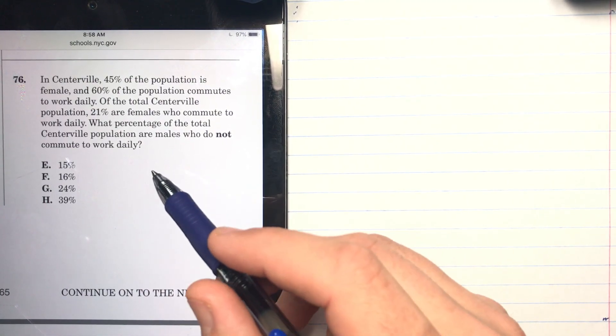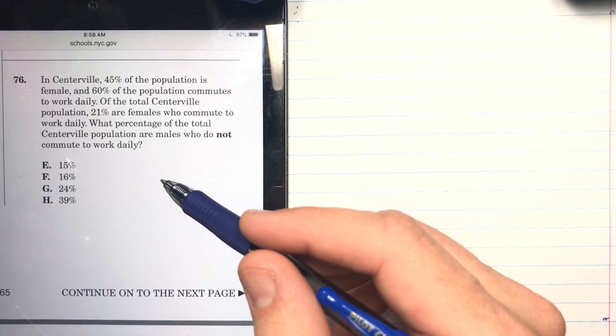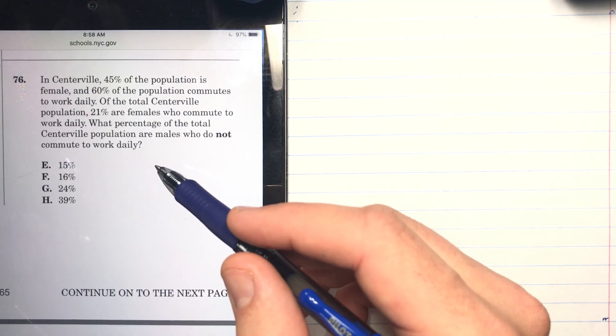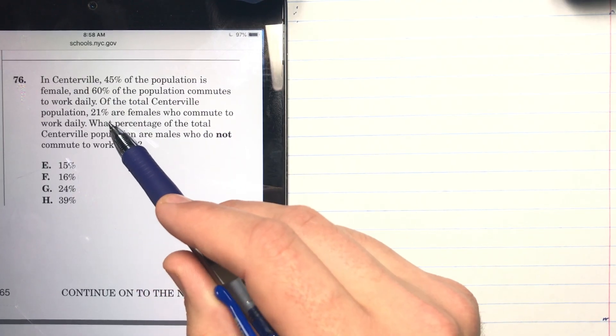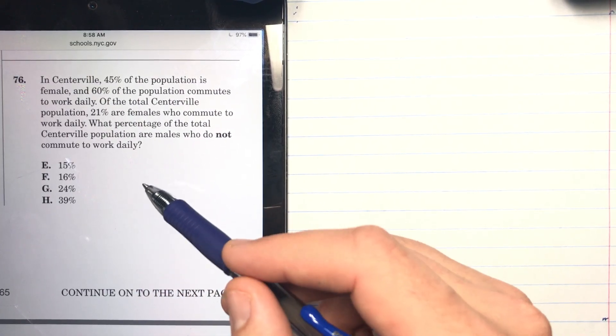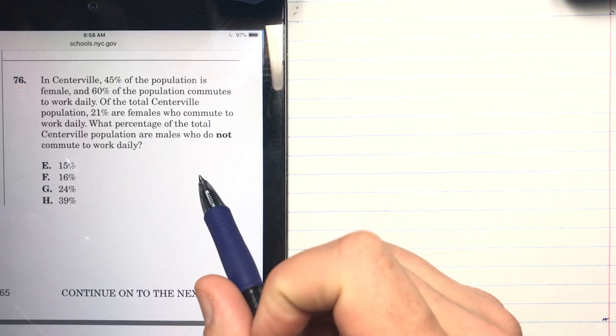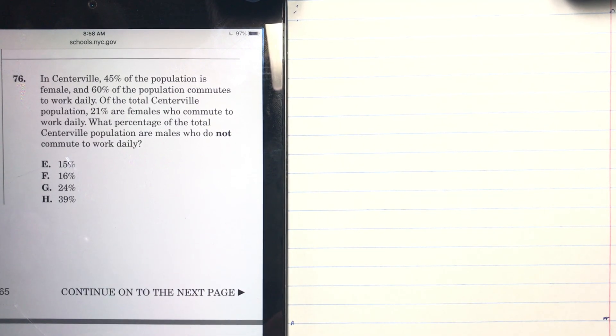First, let's read the problem. In Centerville, 45% of the population is female and 60% of the population commutes to work daily. Of the total Centerville population, 21% are females who commute to work daily. What percentage of the total Centerville population are males who do not commute to work daily? We're given two things that we need to look at here.